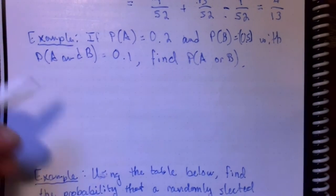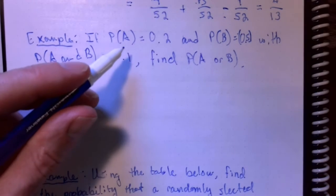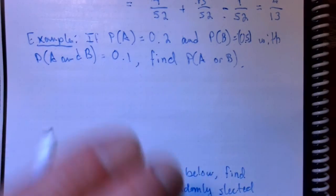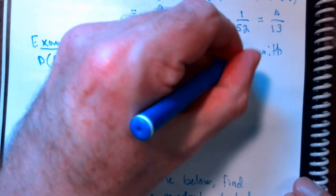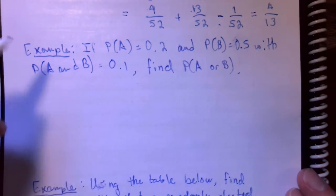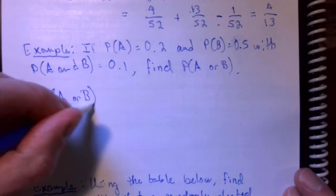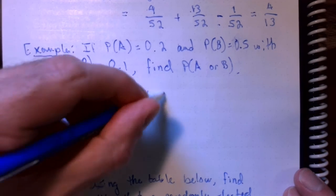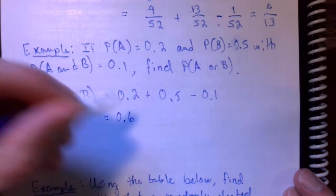You should be able to just do this with generic events. They're telling us here that the probability of event A is 0.2, the probability of event B is 0.5. The probability of A intersect B is 0.1, so the probability of A or B would be 0.2, plus 0.5, minus 0.1, and we get 0.6.